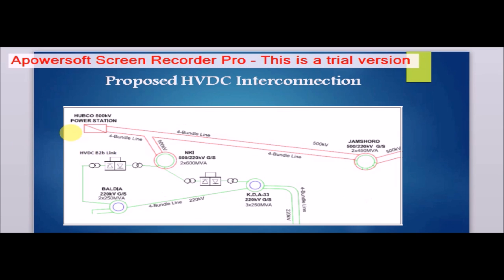As a solution to this problem, we have proposed the HVDC interconnection between the two utilities in place of the existing HVAC interconnection. The proposed HVDC interconnection is between the NKI bus and the KDA bus at the K-Electric side, and between NKI and Baldia at the K-Electric side.